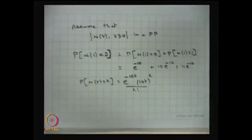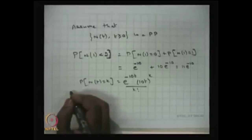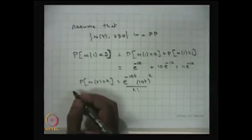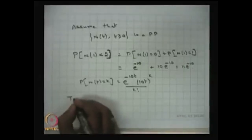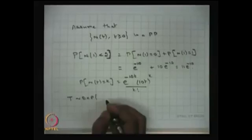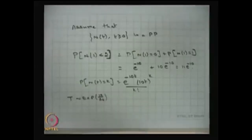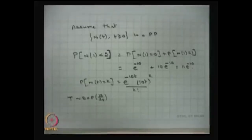The second question asks: what is the probability that the time until the next reported claim is less than two hours? This means the inter-arrival time T follows an exponential distribution with parameter lambda. Since the rate is 10 claims per day and there are 24 hours in a day, the rate per hour is 10/24. So T is exponentially distributed with parameter 10/24.